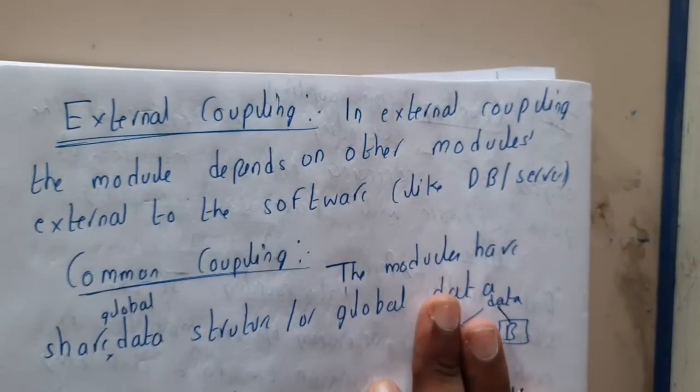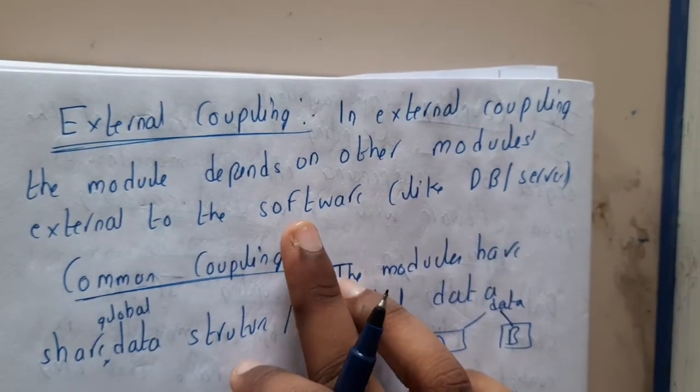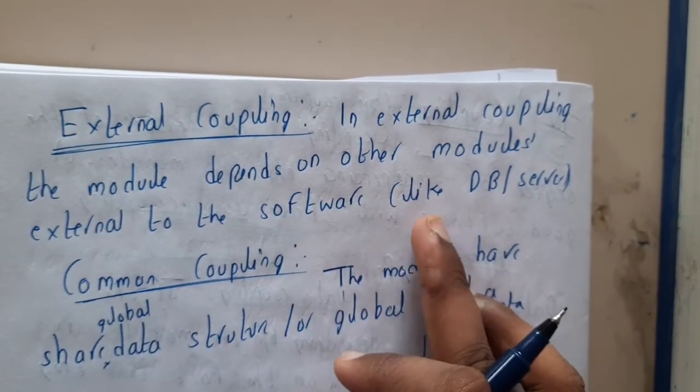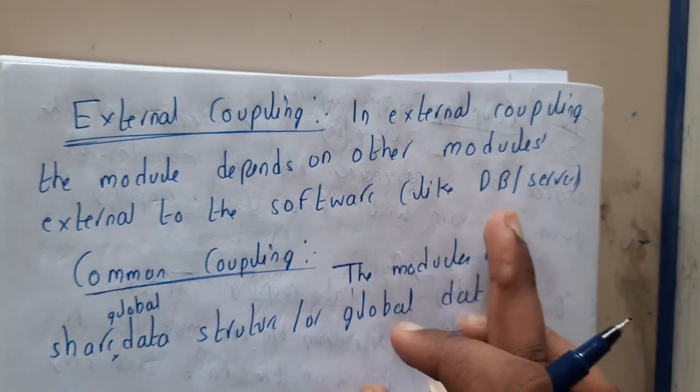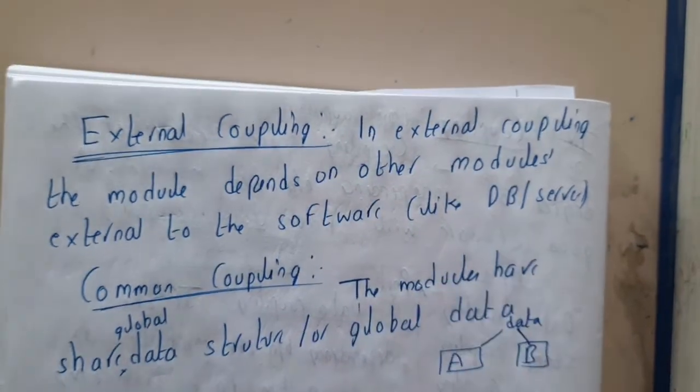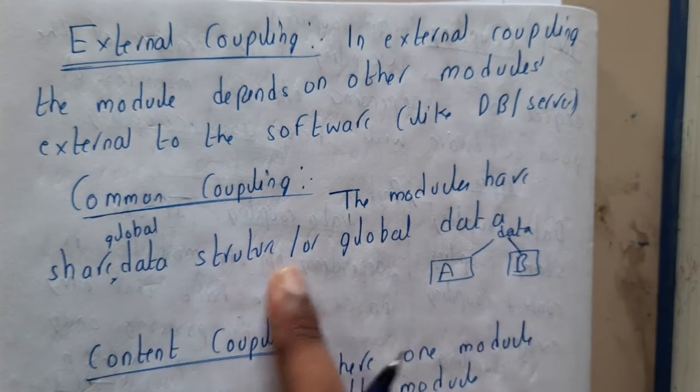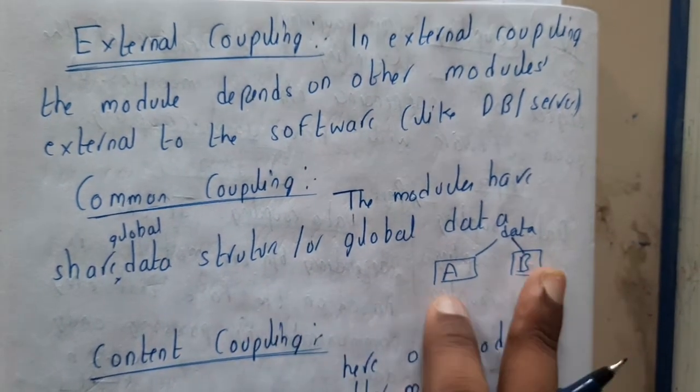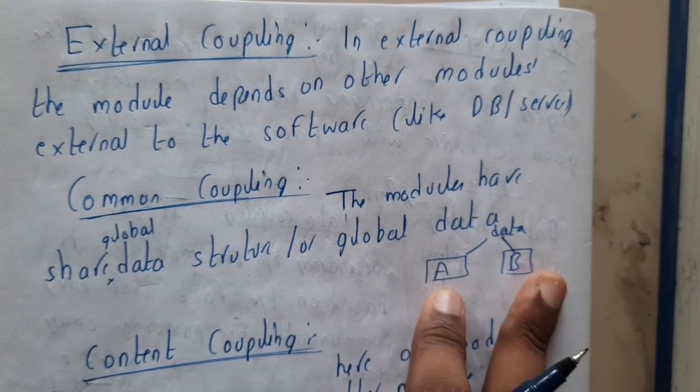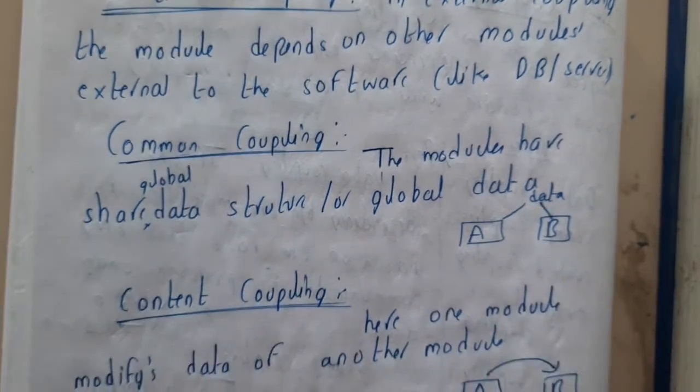In external coupling, the module depends on other modules externally, like software, databases, servers, and everything. Common coupling: the modules have shared global variables. Basically both modules depend on one particular data.